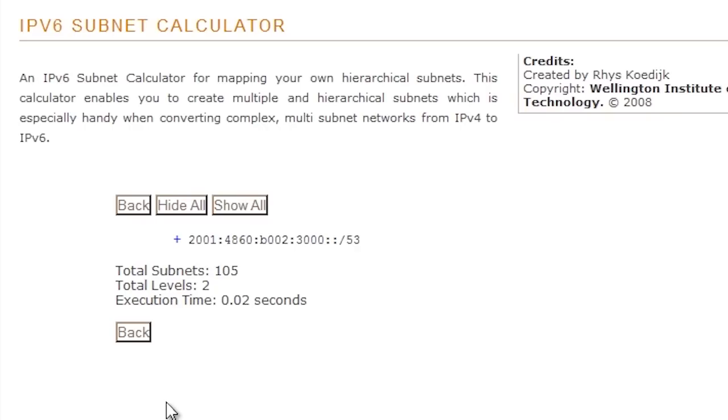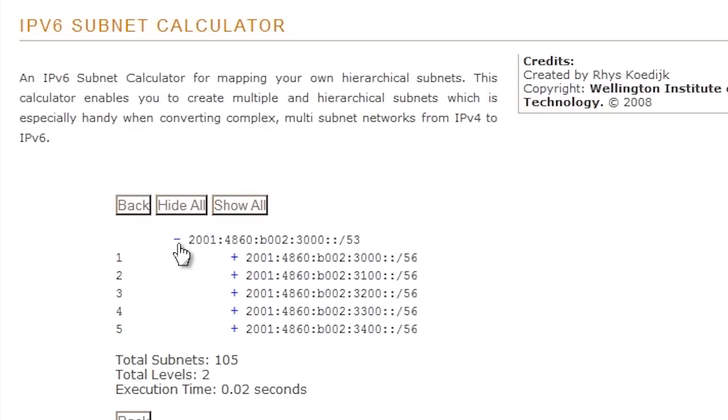Once the subnets are calculated, when I expand down to the first level I can see the 5 subnets each with a network prefix of 56. The point to notice here is the first subnet is 3000, the second 3100 and 3200 and so on.